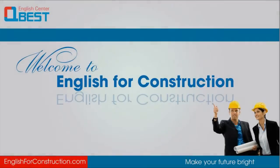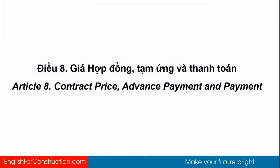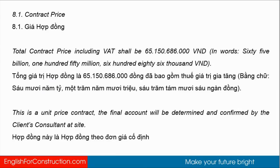Hello and welcome to the video — English for Construction Contract. Let's get started with Article 8: Contract Price, Advanced Payment, and Payment. 8.1 Contract Price: The total contract price including VAT should be 65 billion 150 million 686 thousand.